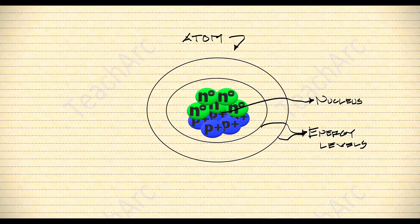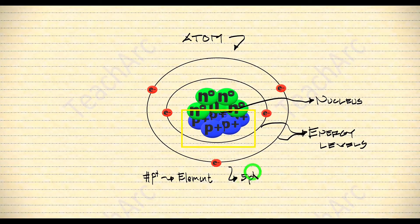On the other hand, the electrons are found randomly moving at the energy levels. There are more to learn about these energy levels which we will tackle in our future lessons. The number of protons determines the identity of the element. Since we have five protons, this atom that we have right now is called boron.